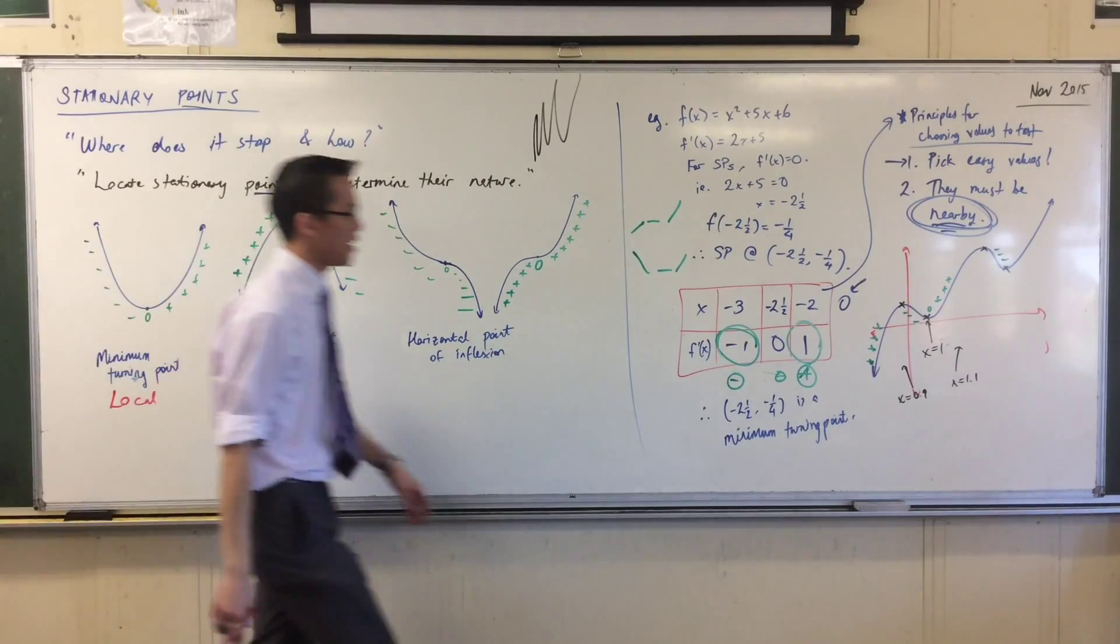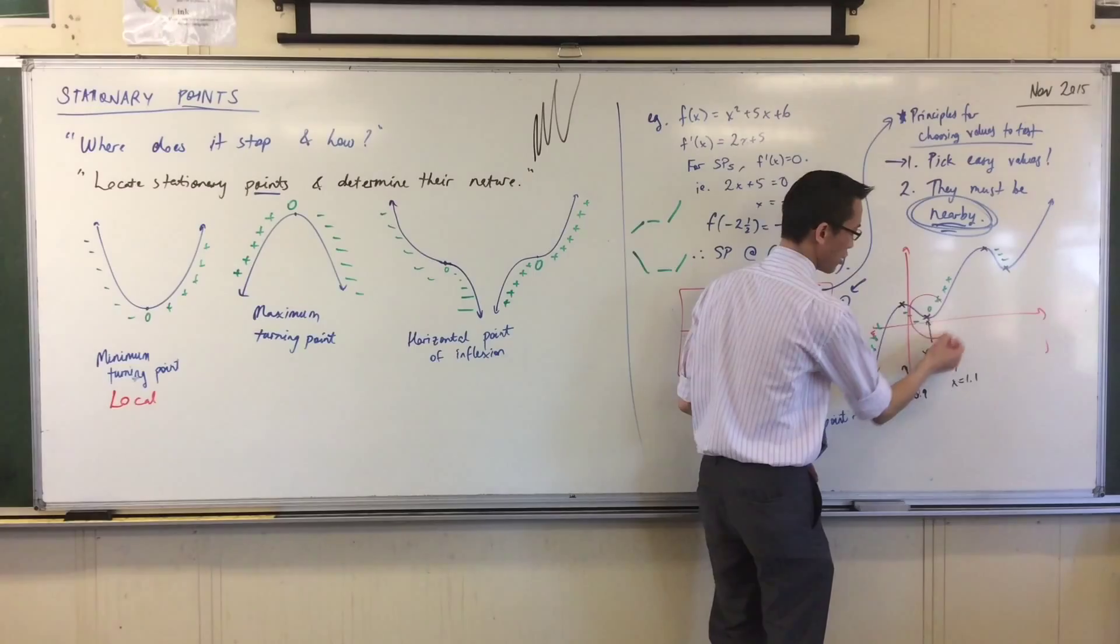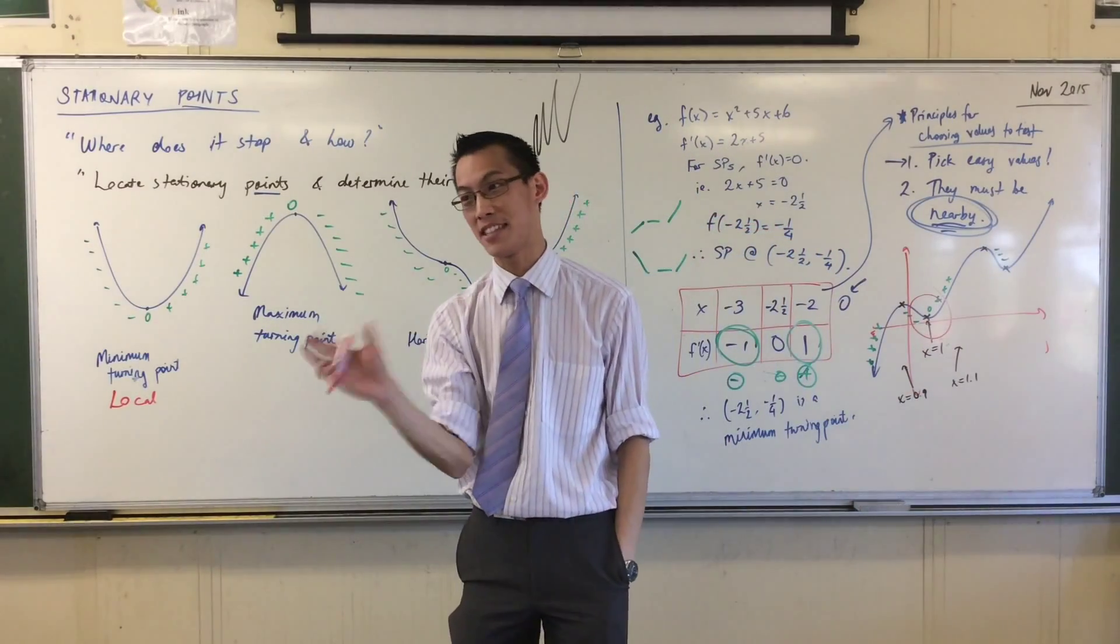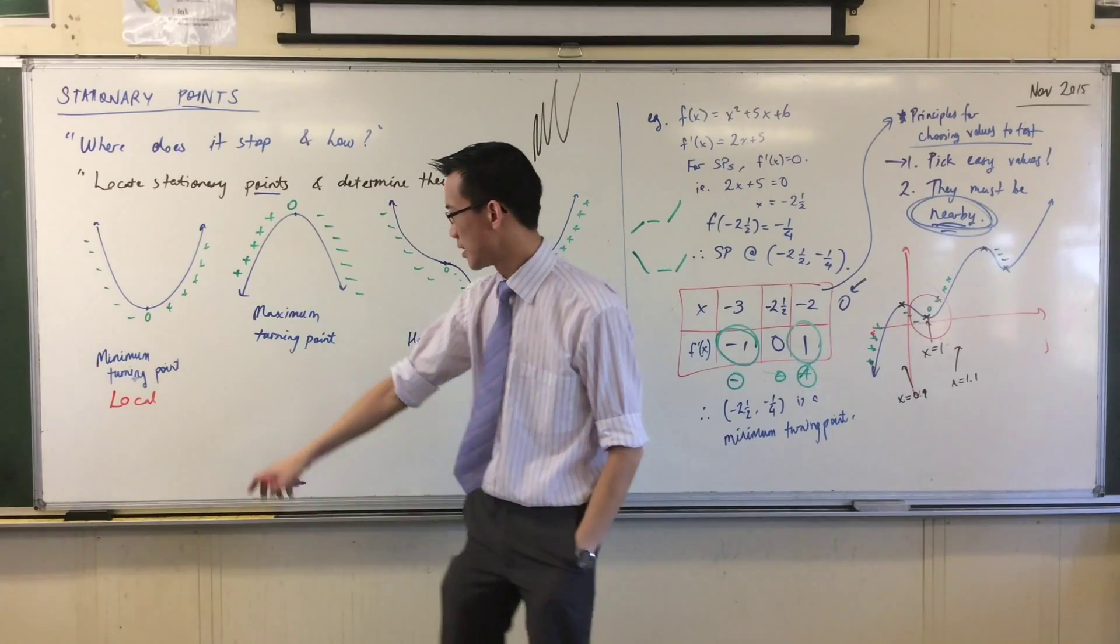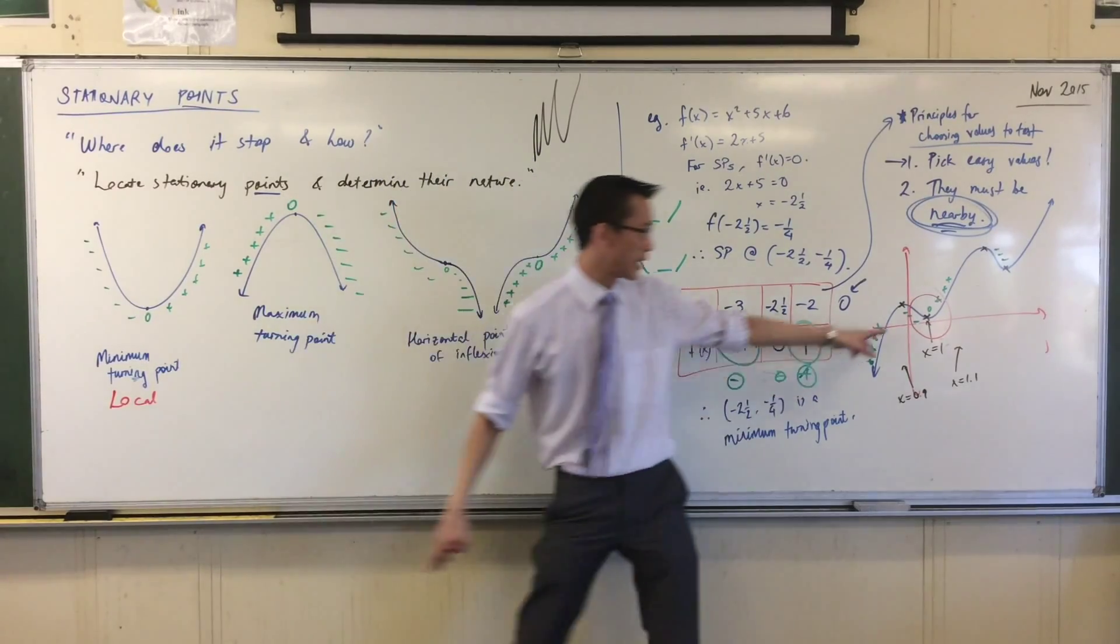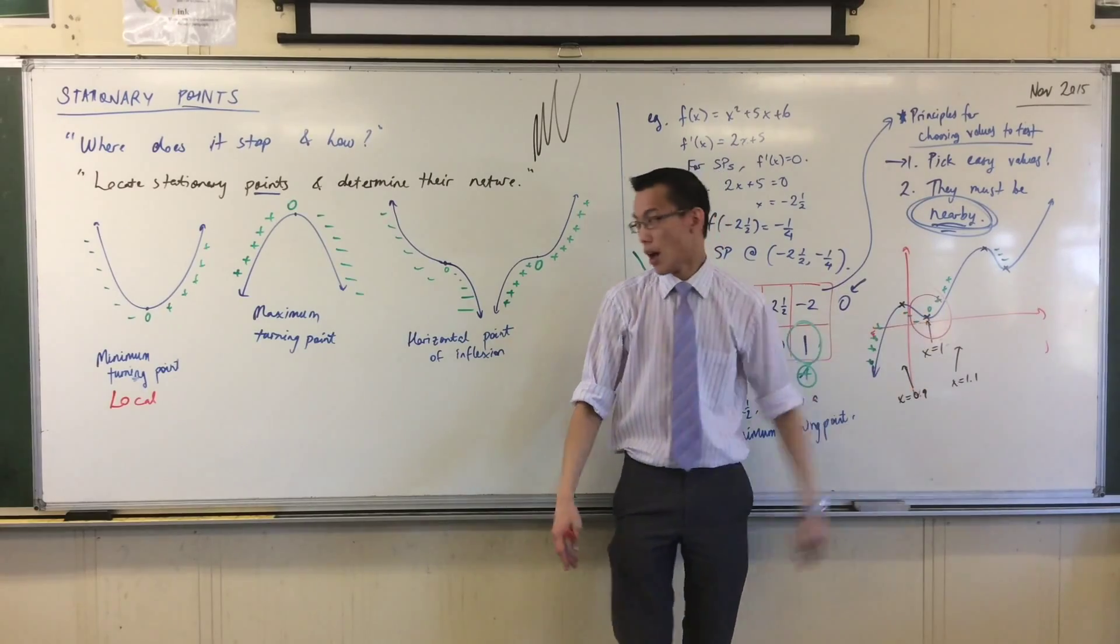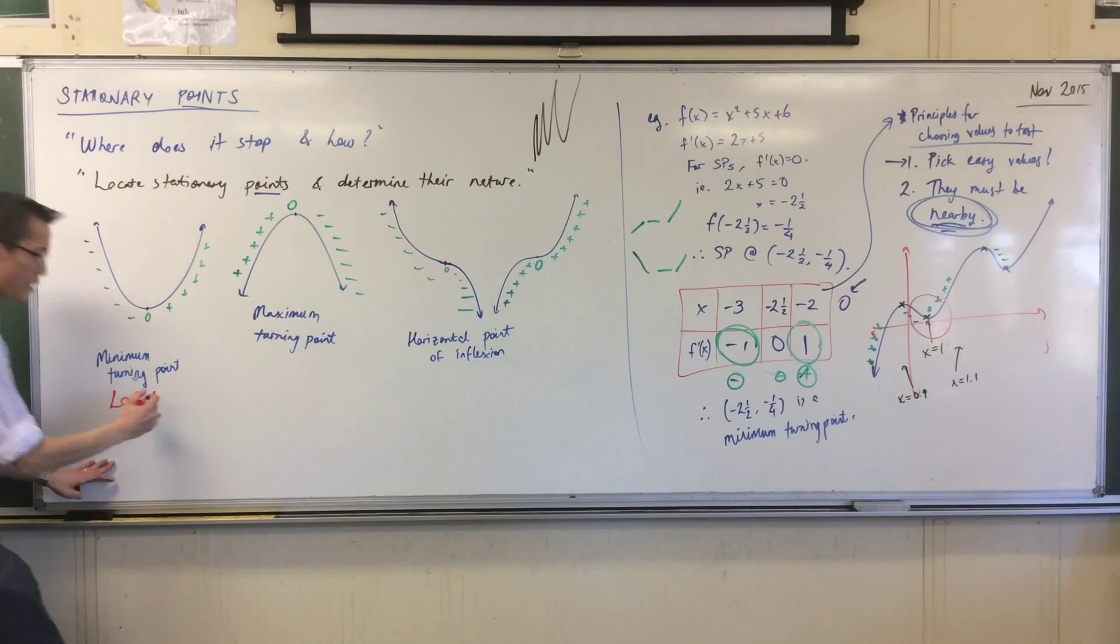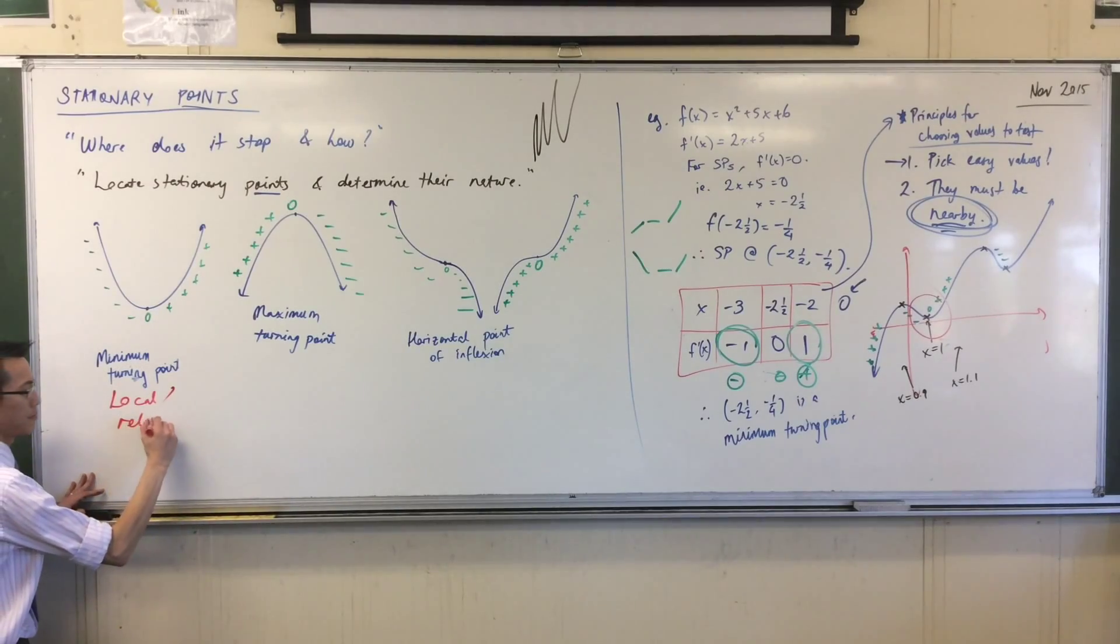The actual minimum and maximum we're describing over here are what we call either local, remember how I talked about neighborhood? So it's like, just in this little spot, in this little patch of the function over here, within that small domain, and there's no hard and fast definition for small. In the neighborhood, this is the minimum. Like, this is the lowest you can get. Local's a bit of a geographical word. I think a better word is relative.